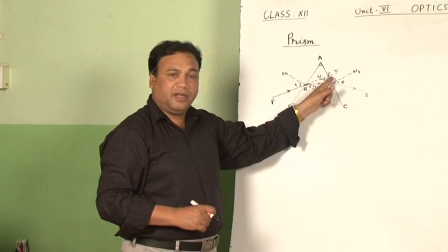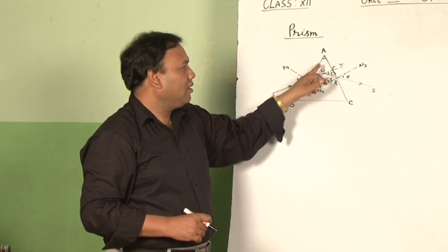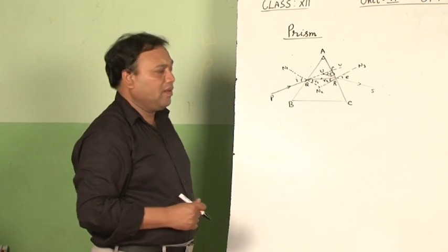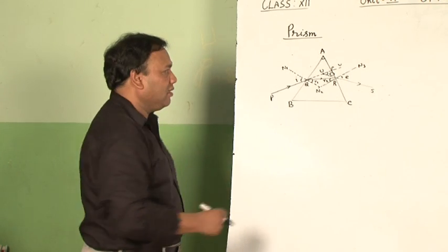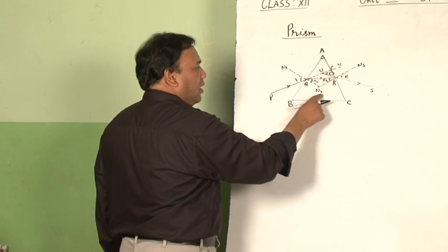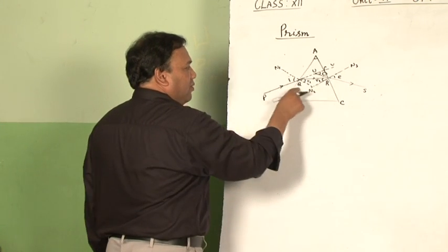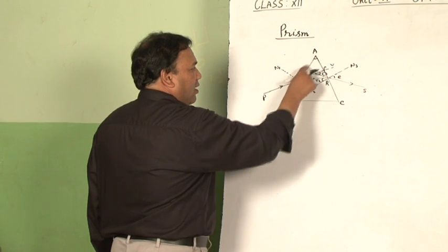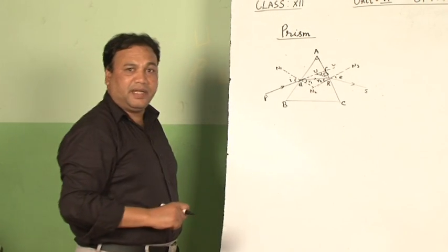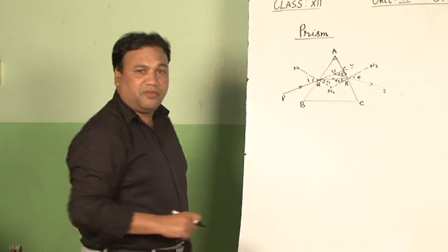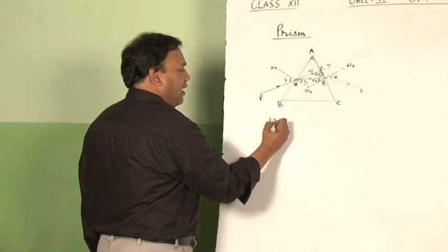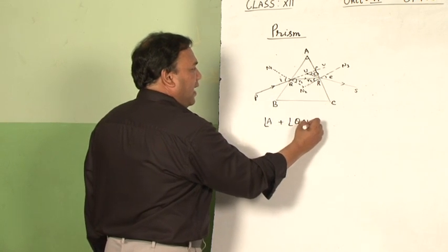The angle of deviation depends upon the nature and angle of the prism. We will derive the relation for that. Consider the quadrilateral AQN2R. In AQN2R, angle AQN2 and angle ARN2 are 90 degrees each. Therefore, the sum of these two angles is 180 degrees, leaving angle A and angle QN2R, whose sum is also 180 degrees.